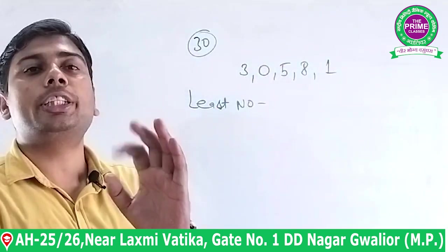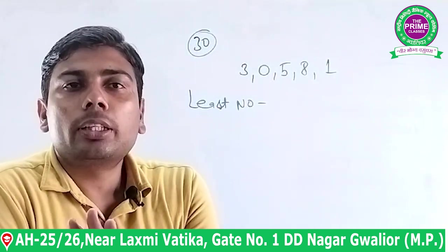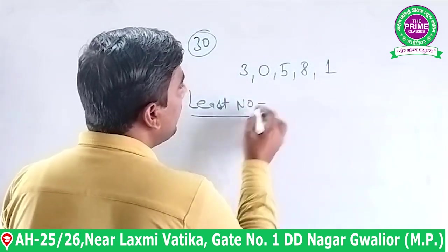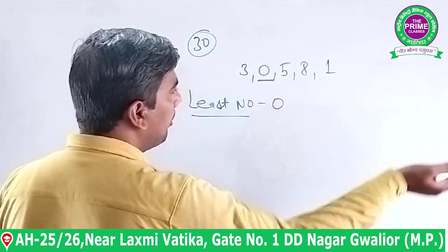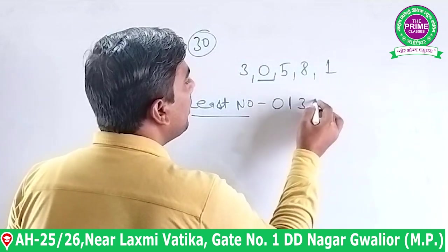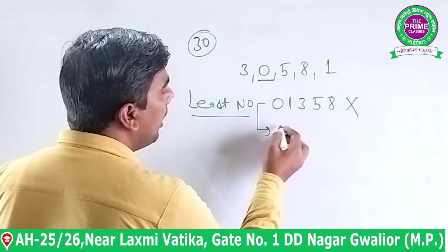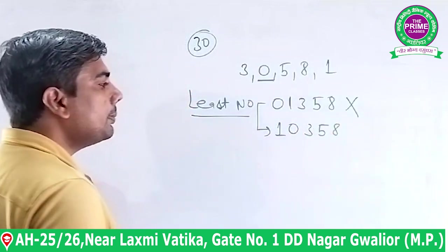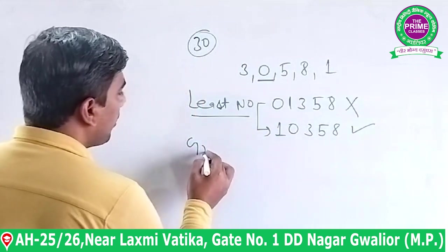Least number बनाते समय एक बात याद रखना है — कभी भी zero आगे नहीं रखना। क्योंकि किसी number के आगे zero लग जाता है तो उस zero की कोई value नहीं होती। इसलिए 01358 गलत है। सही least number होगा 10358।